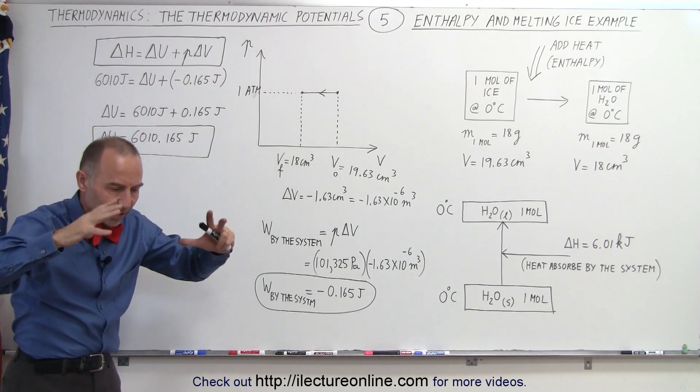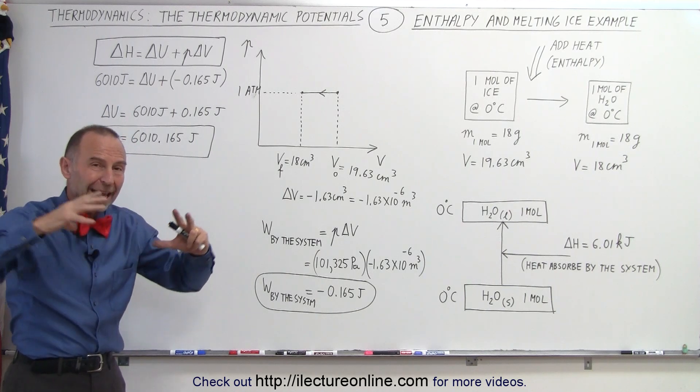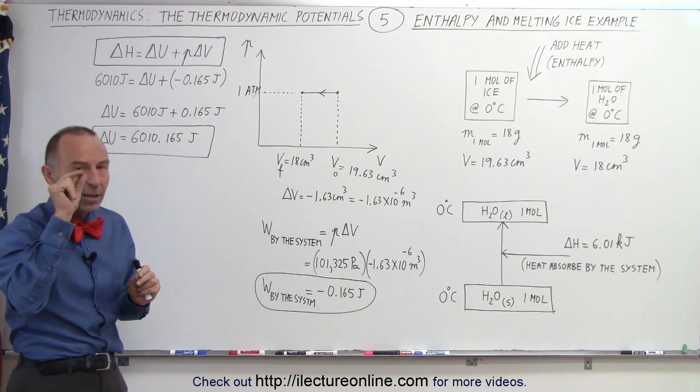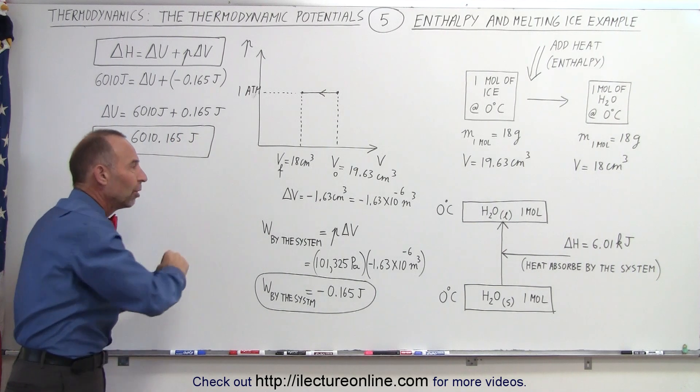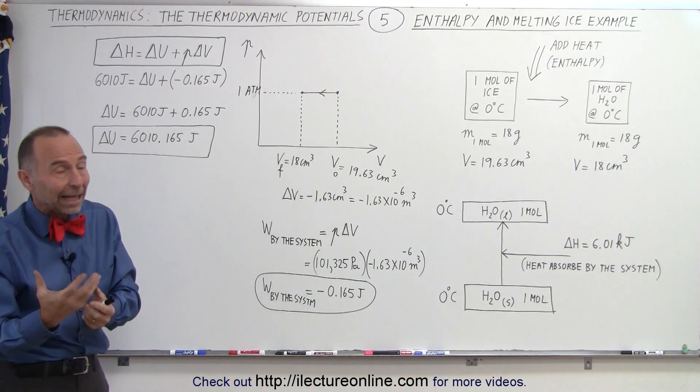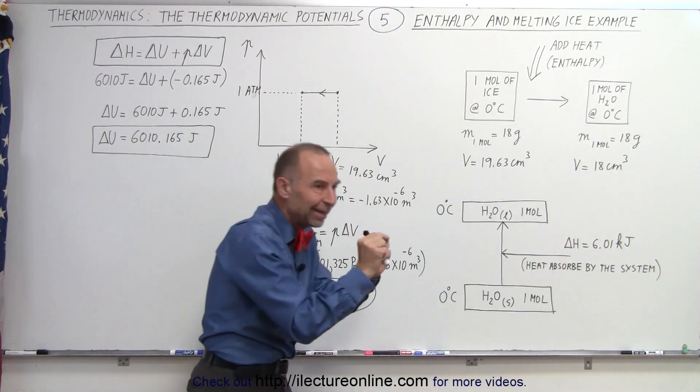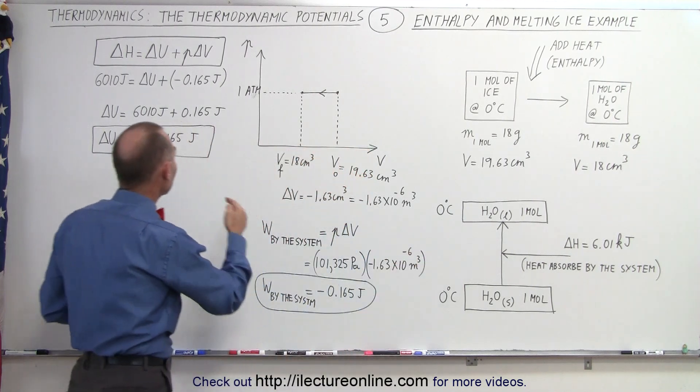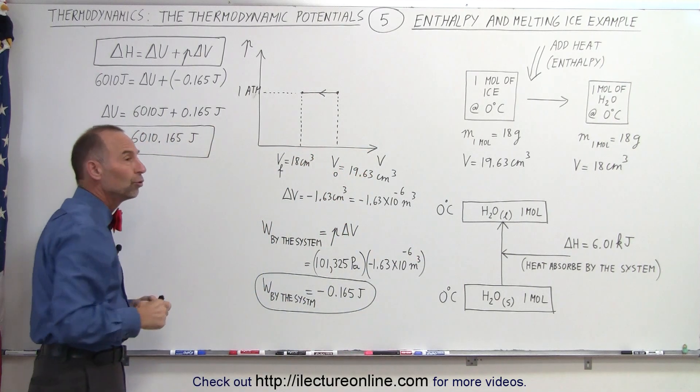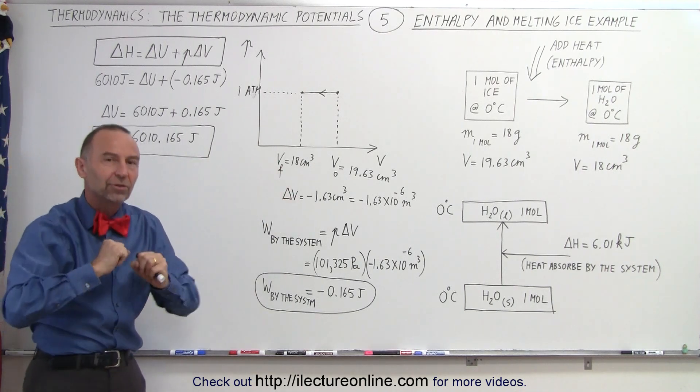In other words, the pressure of the atmosphere pushing down on the ice while it's turning from ice into water helped melt the ice. A little bit of the energy came from the work that the atmosphere did on the system, so not all of that heat had to be provided in terms of the enthalpy. We were able to give it a little bit less energy, a little bit less heat required to melt the ice because the rest of it, 0.165 joules, was supplied by the atmosphere doing work on the system.